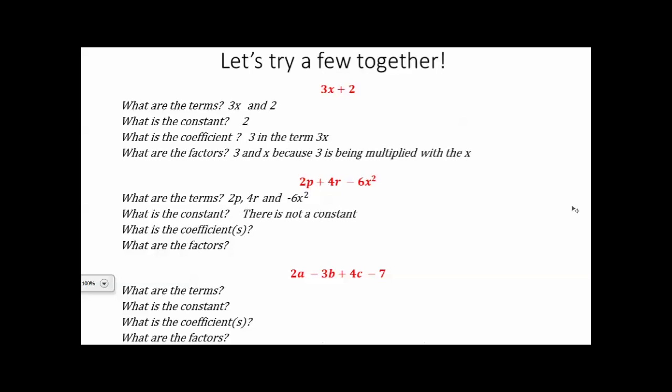Coefficient is the number that's being multiplied by the variable. We'll notice we have three of those happening here. So the 2 is the coefficient in the term 2p, the 4 is the coefficient in the term 4r, and negative 6 is the coefficient in the term negative 6x squared. For our factors, remember we're looking for our term or terms that contains multiplication. We know 2p means 2 times p, so our factors are 2 and p. We know that 4r means 4 times r, so 4 and r are factors. And negative 6x squared means negative 6 times x squared, so both negative 6 and x squared are our factors.